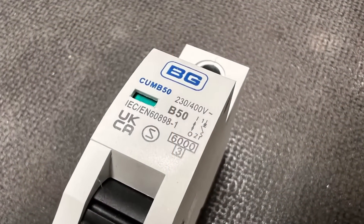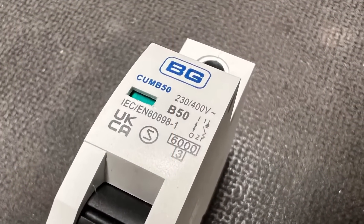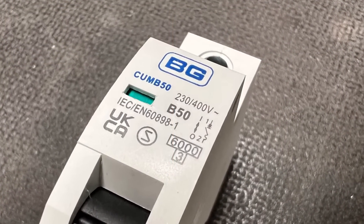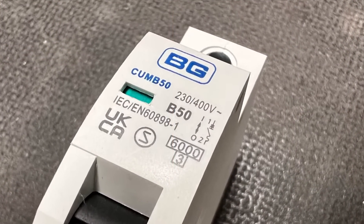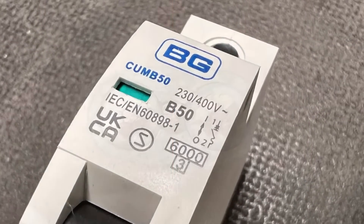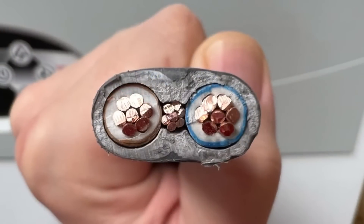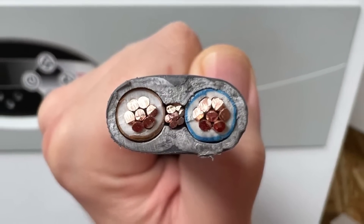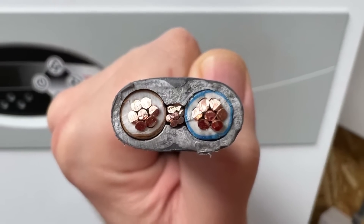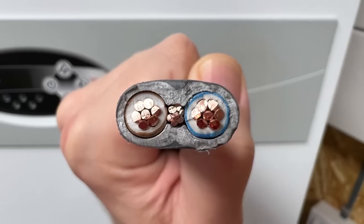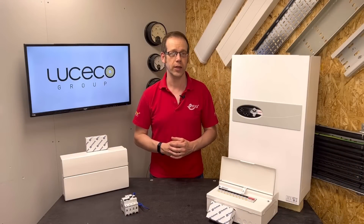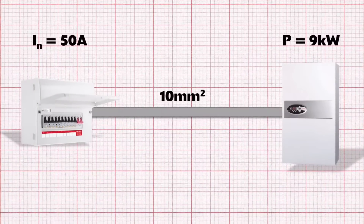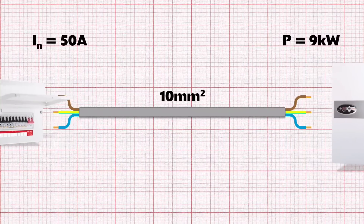We know that the MCB will allow the current to pass through itself without tripping under normal operating circumstances, and we know that the cable will be able to take that amount of current. But there are still some checks to be made on the cable we've selected to make sure that the load will operate correctly under normal running conditions. The first of these is the volt drop.